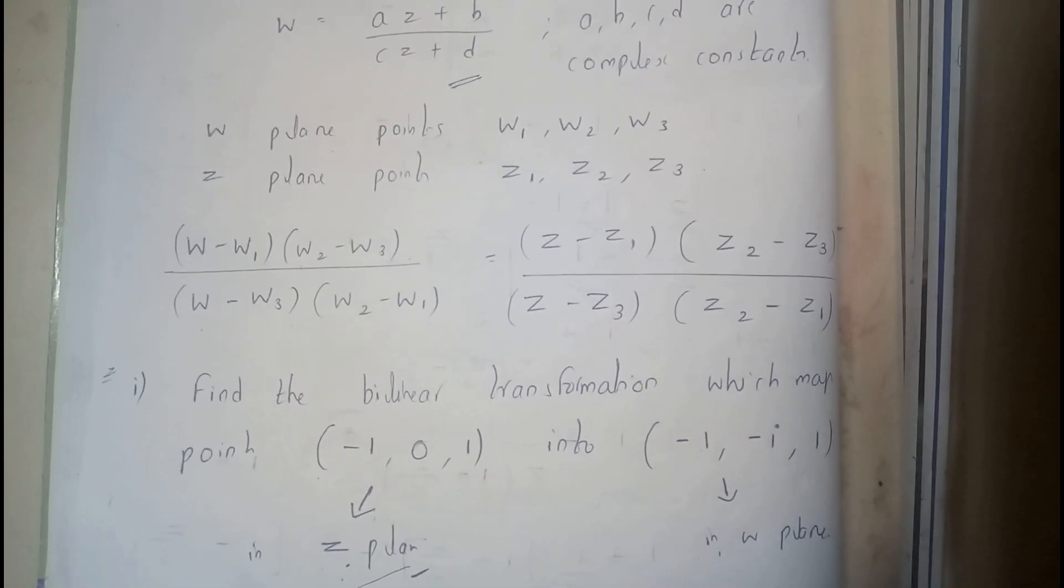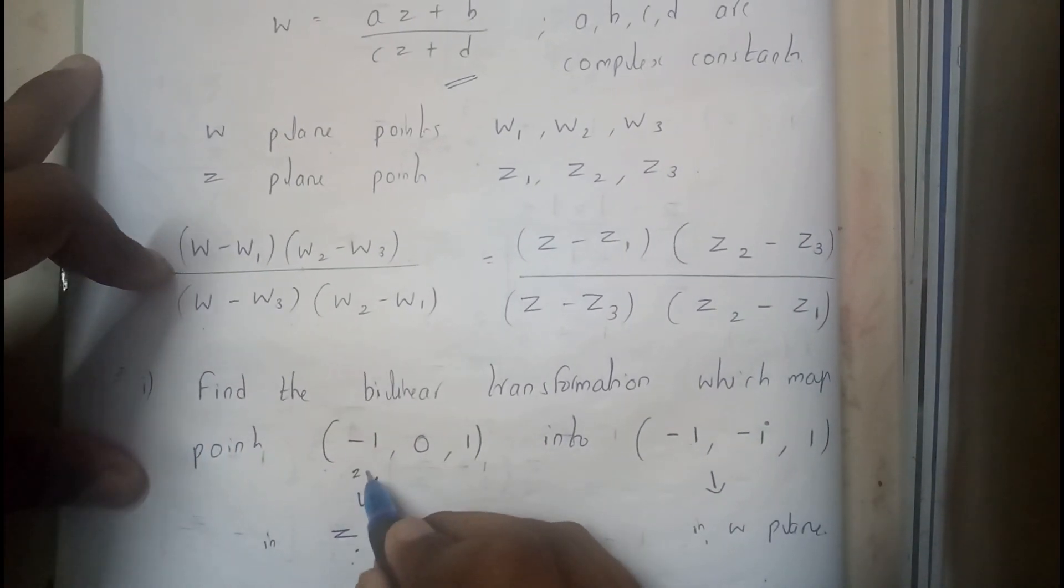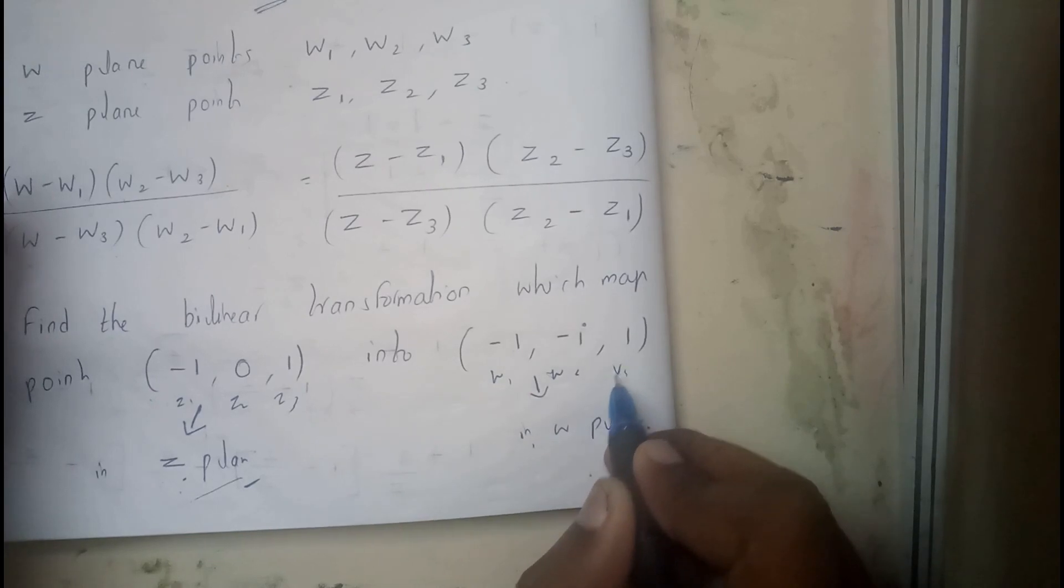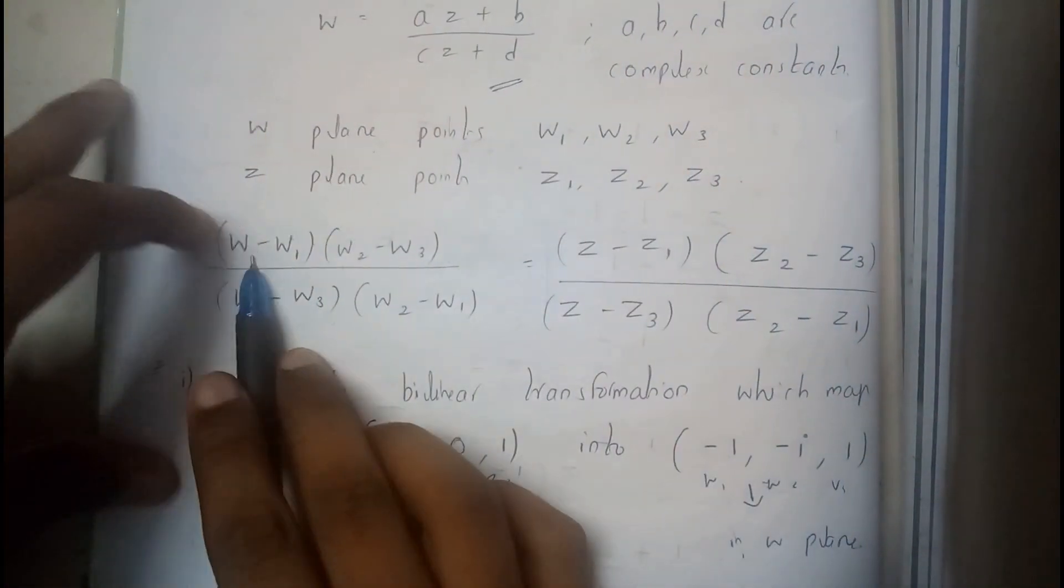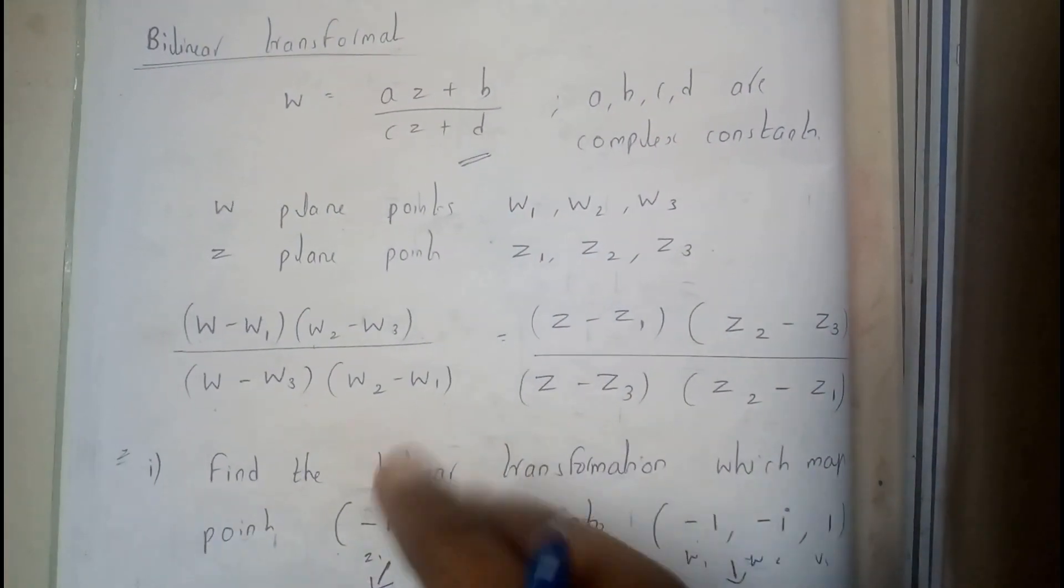Now I hope everyone got a small idea on what I am trying to say. So now let us go through this problem. This is one of the most basic problems. So this will be our z1, z2, z3, w1, w2, w3.